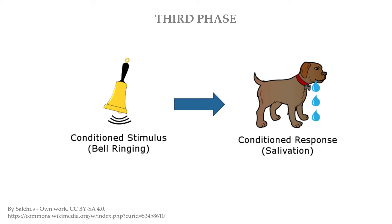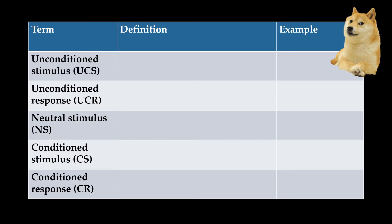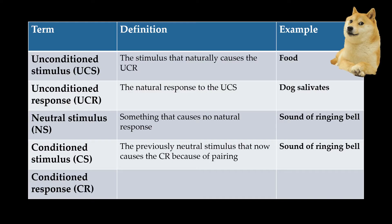This is in essence how classical conditioning works — it's all about learning to associate something neutral with something natural. Let's break down the five key terms. The unconditioned stimulus, or UCS, is the stimulus that naturally causes the unconditioned response, or UCR. In Pavlov's case, food was the UCS and the dog salivating was the UCR — just a natural response the dog already had. Then Pavlov introduces the neutral stimulus, or NS, something causing no natural response, like the ringing bell. By pairing it with the food repeatedly, the neutral stimulus turns into a conditioned stimulus, or CS. Now the conditioned response is the new automatic response to what was the neutral stimulus — the dog salivates to the bell alone.